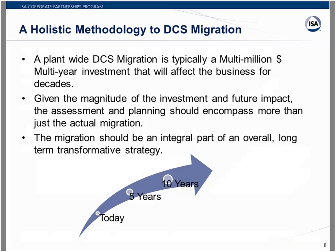A plant-wide DCS migration is a multi-million dollar, multi-year investment that affects the business for years or decades to come. With that magnitude of investment, it's a good idea to take a step back and ask: where do we stand now in our overall controls program, and where do we want to go in the future? How do we make that DCS migration fit into the overall plan — developing a strategy that gets us from where we are to where we want to be in five or ten years?